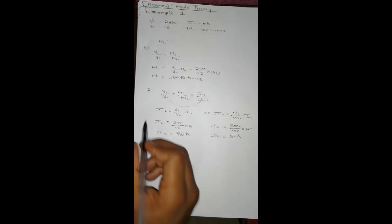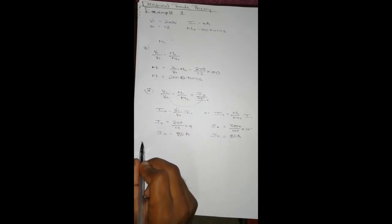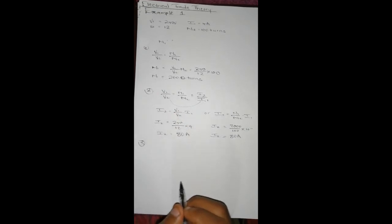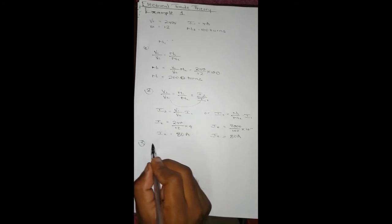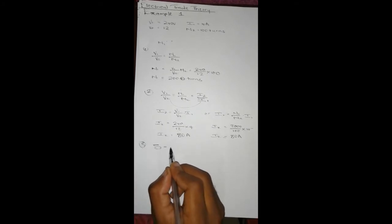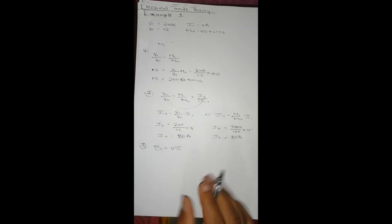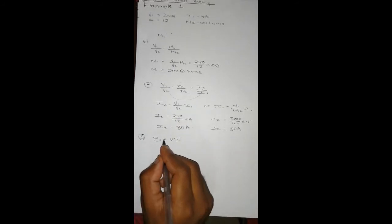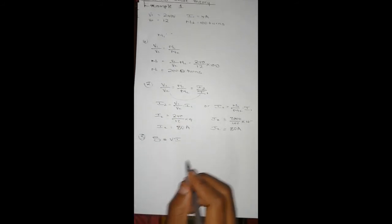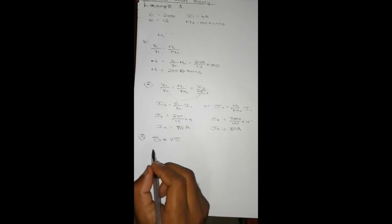That's 80 mA. And then the third question says calculate the transformer rating. The transformer rating is the apparent power, which is S = V × I, and we can use the primary side or the secondary side.